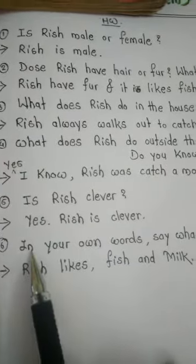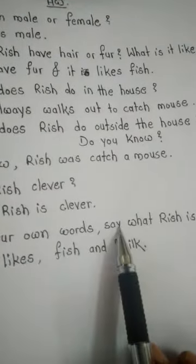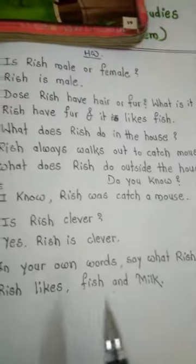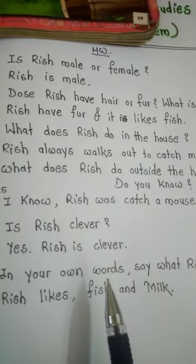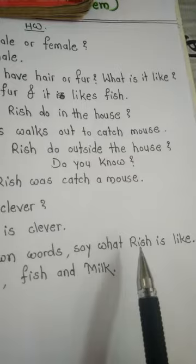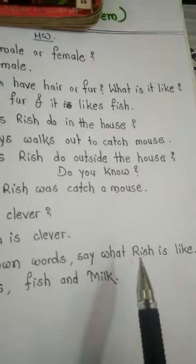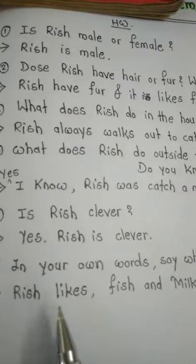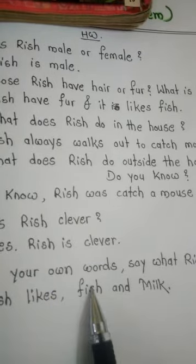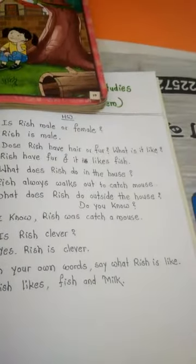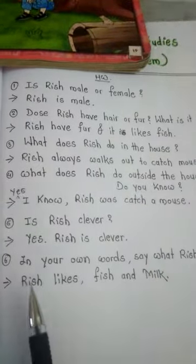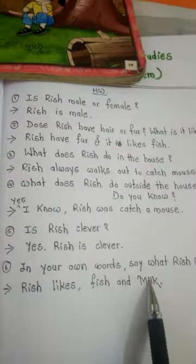Then the sixth question is: in your own words, say what Rich is like. Aap apne man se is question ka answer likh sakte hain, jisme puchha hai ki Rish ko kya pasand hai? So you can write: Rish likes fish and milk. Kyunki billi ko milk pasand hota hai, ya toh fish.